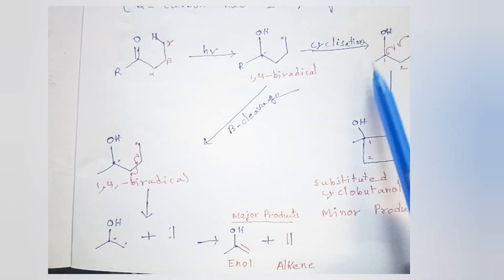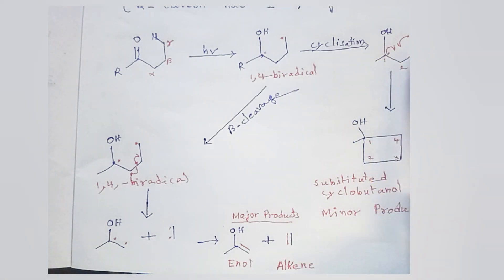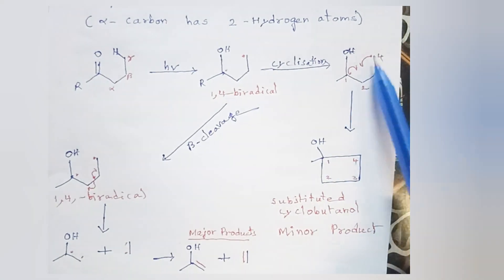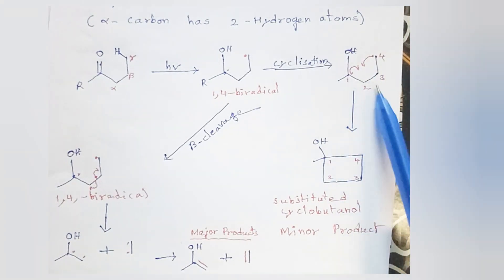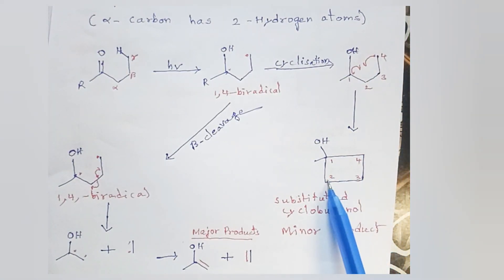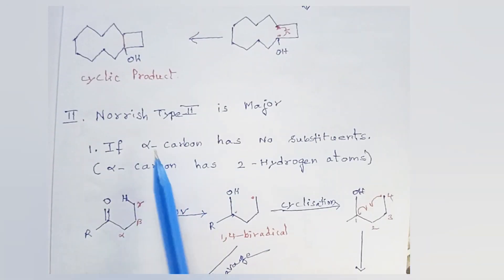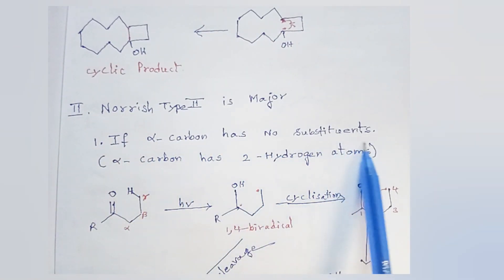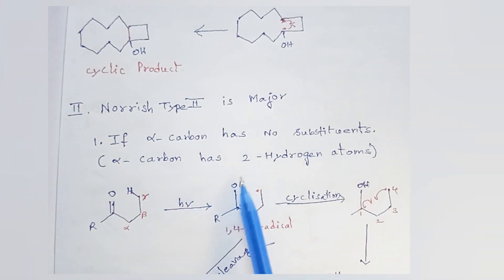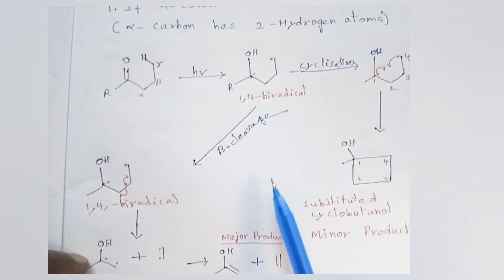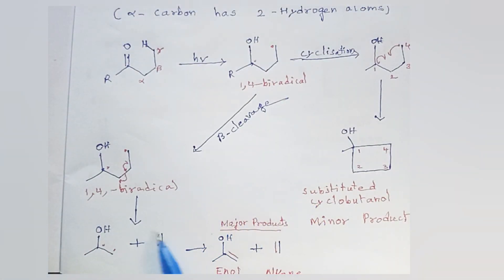Cyclization will also occur of this 1,4-biradical, but it is a minor product. So if the alpha carbon has no substituents, the major products will be from beta cleavage — that is, a Norrish type 2 reaction giving us enol and alkene.